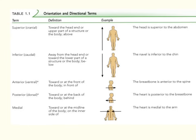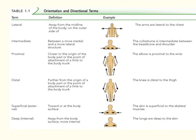Medial means towards the midline — the heart is medial to the arms, meaning it's in the middle of the arms. Lateral means away from the midline — the arms are lateral to the chest or heart, they are to the outside. Intermediate means between — the collarbone is intermediate to the breastbone and the shoulders, meaning it is in between them.